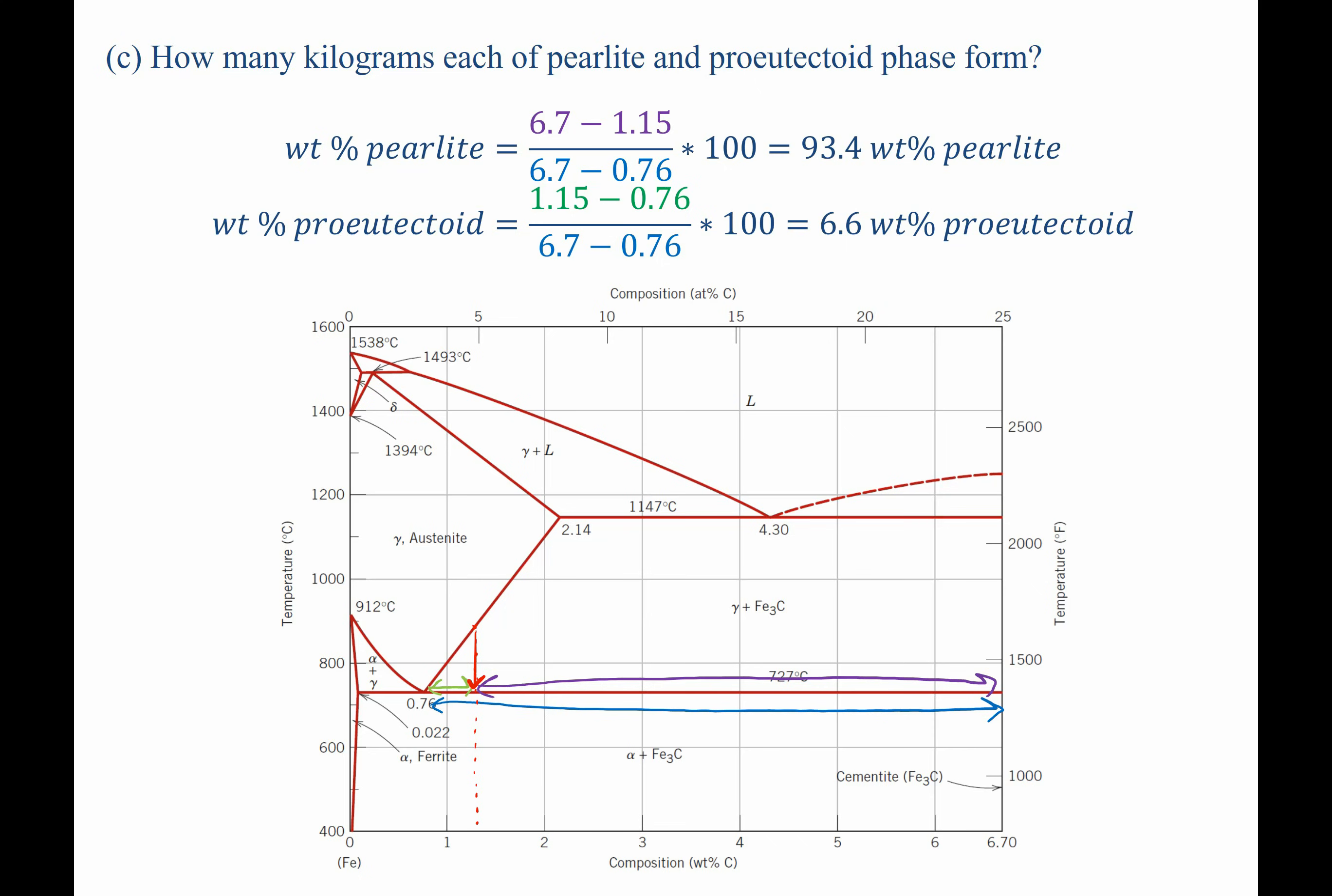When we punch these in, we find that it's 93.4 weight percent pearlite, or in other words, 0.934 kilograms of pearlite, and 0.066 kilograms of pro-eutectoid cementite.